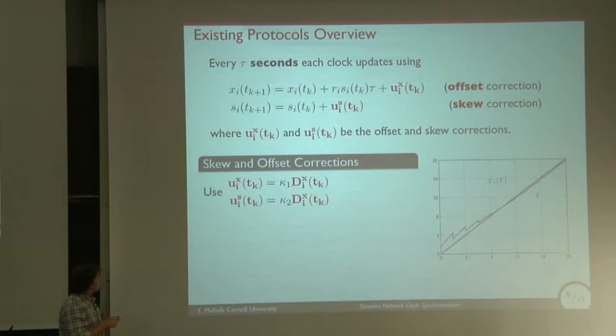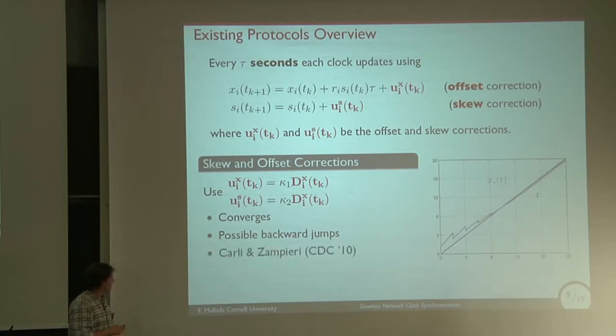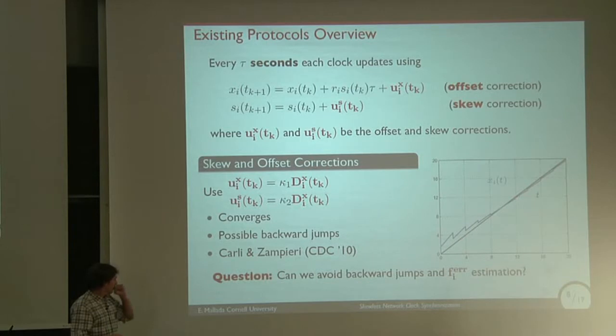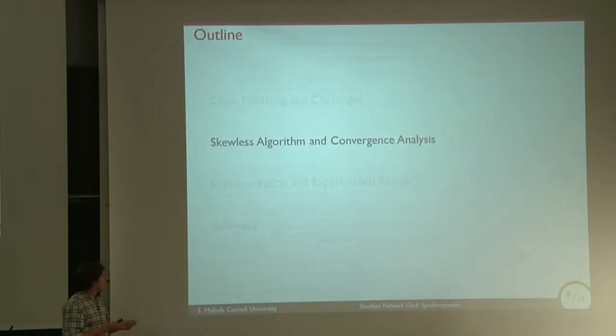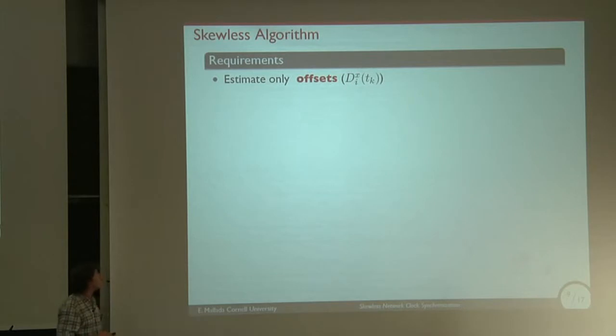Finally, there's another type of solution where you correct both of them using all the offset information. It does converge. However, you can also have backward jumps, which is something that you want to avoid. It was proposed with Carlin's invariance in 2010. So the question is, can we avoid backward jumps and also avoid estimating the frequency error, this skew?